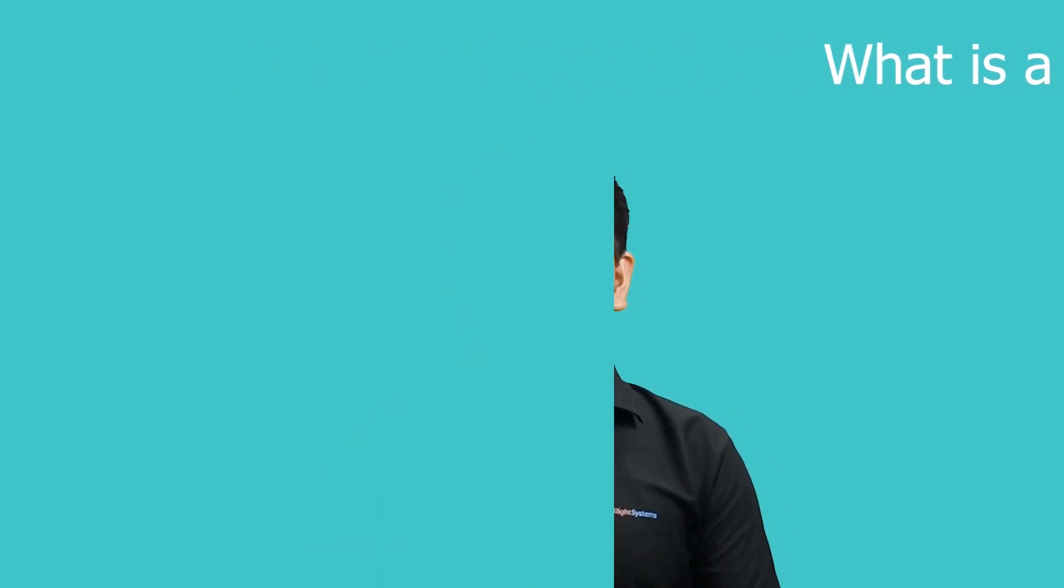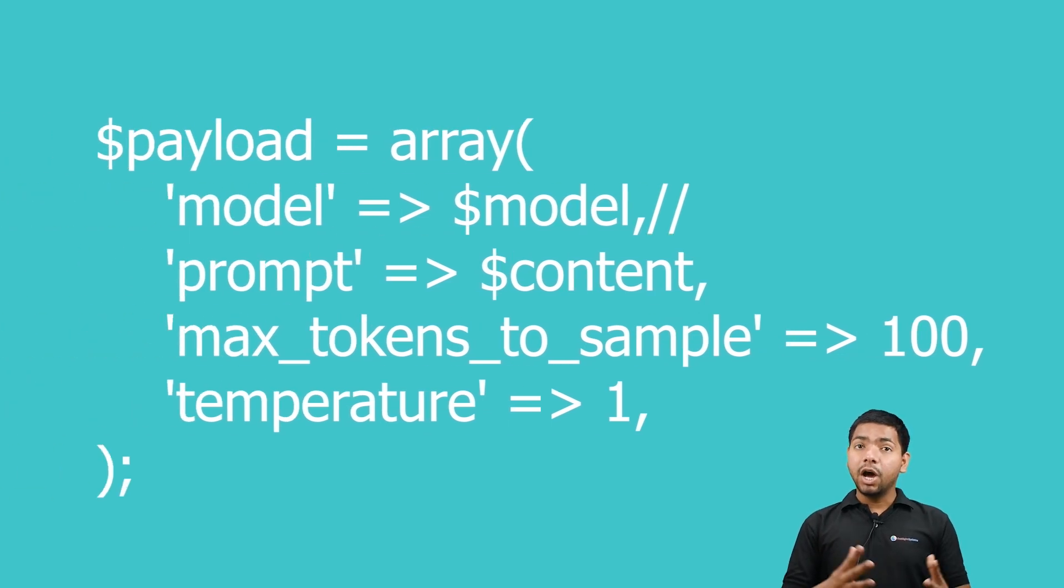Now let's consider this example. You can see the line of code here. Here's a breakdown of each key-value pair in the payload array.